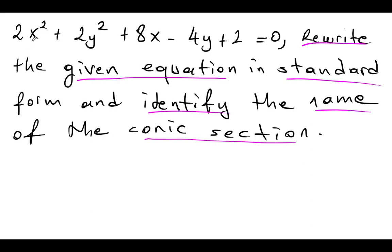So when I look at here, 2x squared plus 2y squared plus 8x, if I take 2 common, 2 times x squared plus y squared plus 4x minus 2y plus 1 is equal to 0.